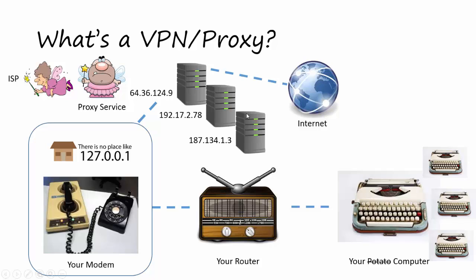In this example, I've used a proxy service. Proxy services often have dozens, hundreds, sometimes even thousands of proxies you can go through. In this case I've gone through a proxy server called 64.36.124.9. Each of these might be in a different location — perhaps one is in the United States, maybe one is in the UK, maybe another is in Australia. I'm connecting to the internet through this, and the internet — all those web servers and resources out there — see my IP address as being 64.36.124.9. In other words, it's hiding my real IP address.